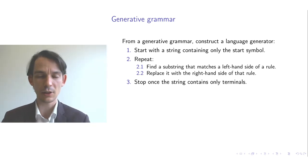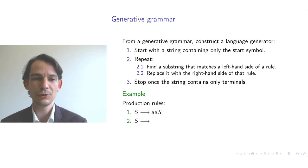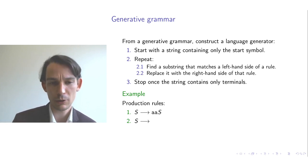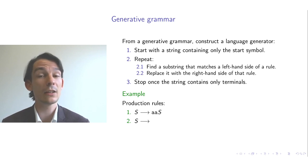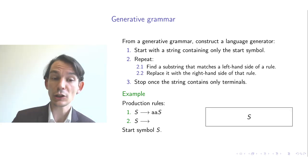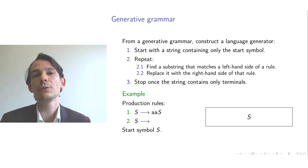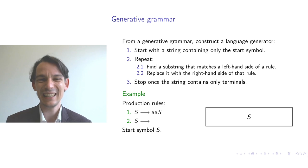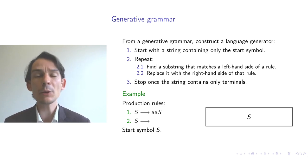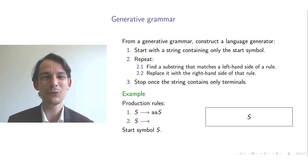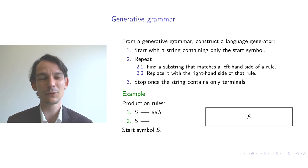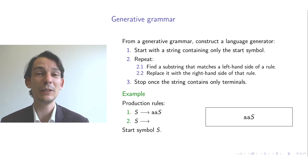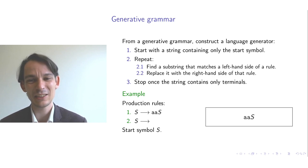Let me give a concrete example. Suppose we have two production rules. The capital letters are the non-terminals — you can think of these as temporary symbols — while the lower-case letters are the characters in our alphabet. The starting symbol is S. On the right-hand side you see a workspace. We start with a string containing only the start symbol, so that's S. Now we repeat: we find a substring matching the left-hand side of a rule. S is obviously matched by both rules, so let's pick the first, and replace it by the right-hand side: A, A, S.